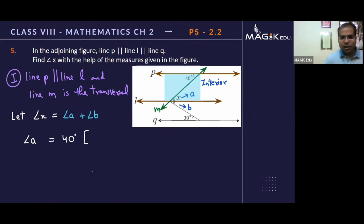What I have understood is angle a equals 40 degrees, and the reason for that is property of alternate angles. So a will get 40.